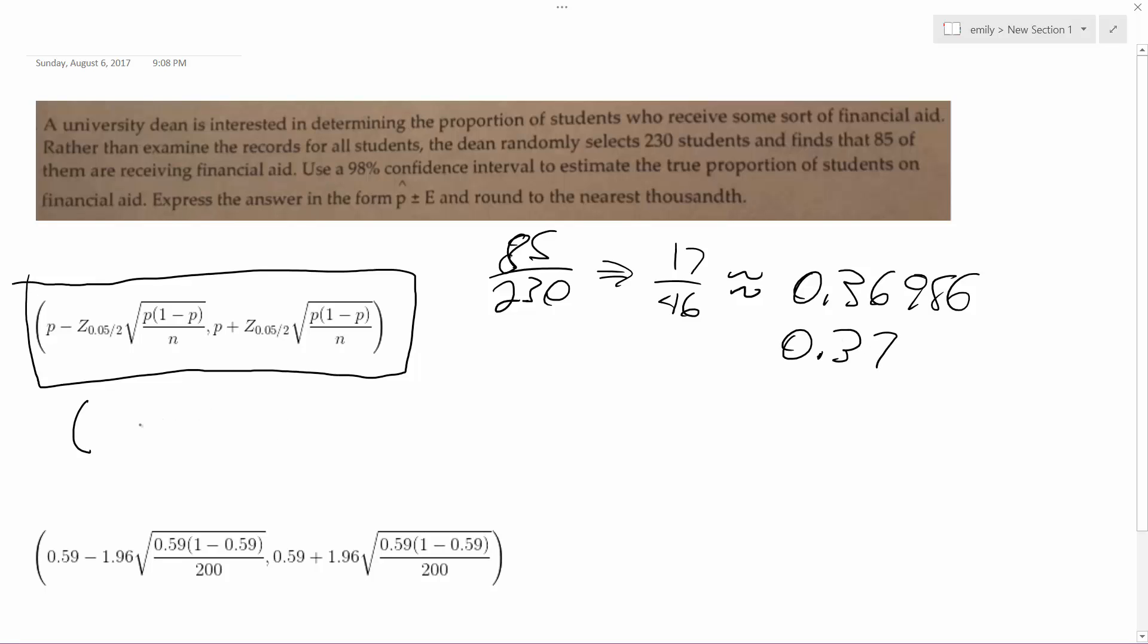Alright so what this becomes is 0.37 minus the confidence interval for 98% is 2.33, so what that is is 2.33 times square root of 0.37 times 1 minus 0.37 all over 230.